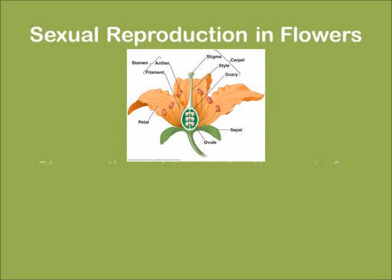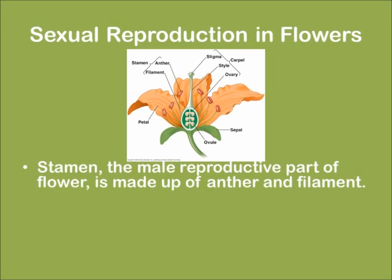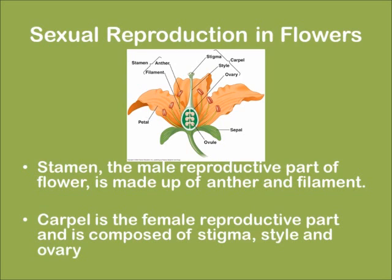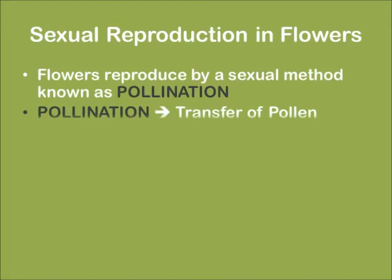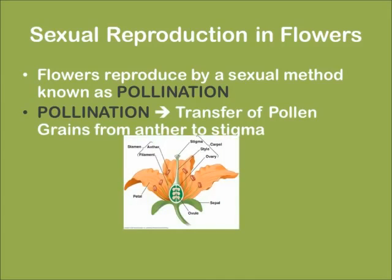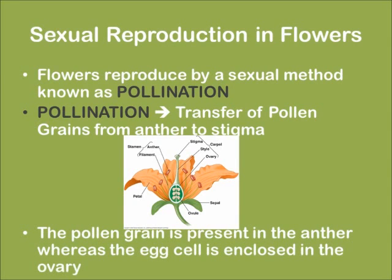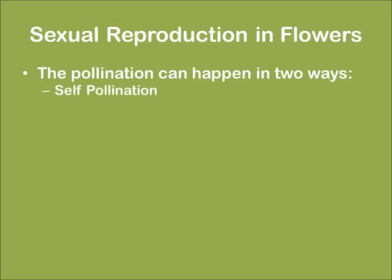Sexual reproduction in flowers. This is how the flower looks. The stamen is the male reproductive part of the flower, made up of the anther and the filament. The carpel is the female reproductive part, composed of the stigma, style, and ovary. Flowers are reproduced by a sexual method called pollination, which is the transfer of pollen grains from anther to stigma. The pollination can happen in two ways: self-pollination and cross-pollination.